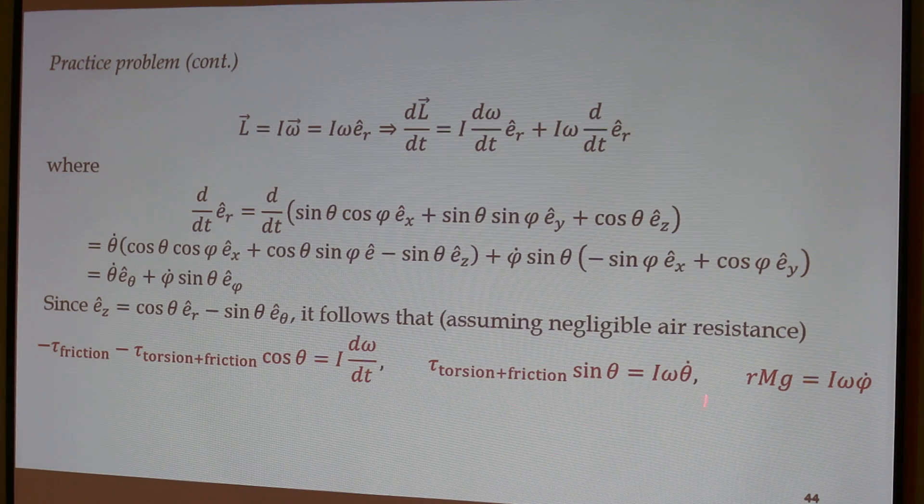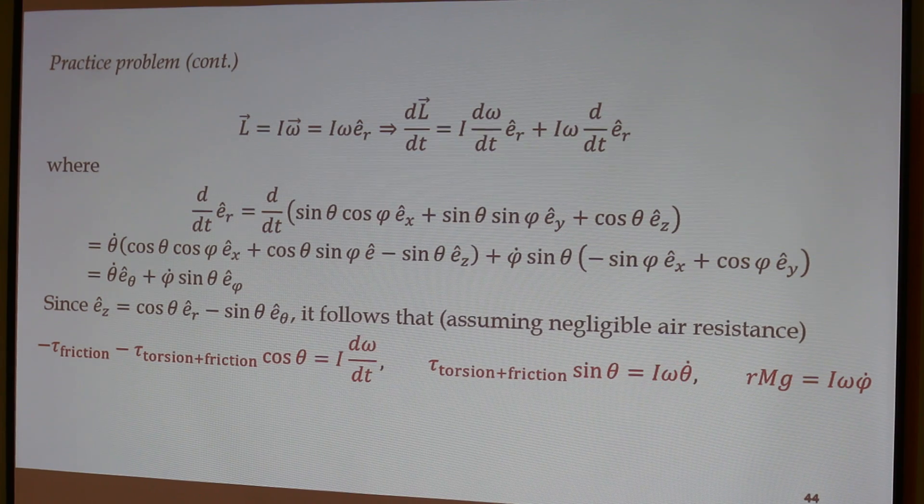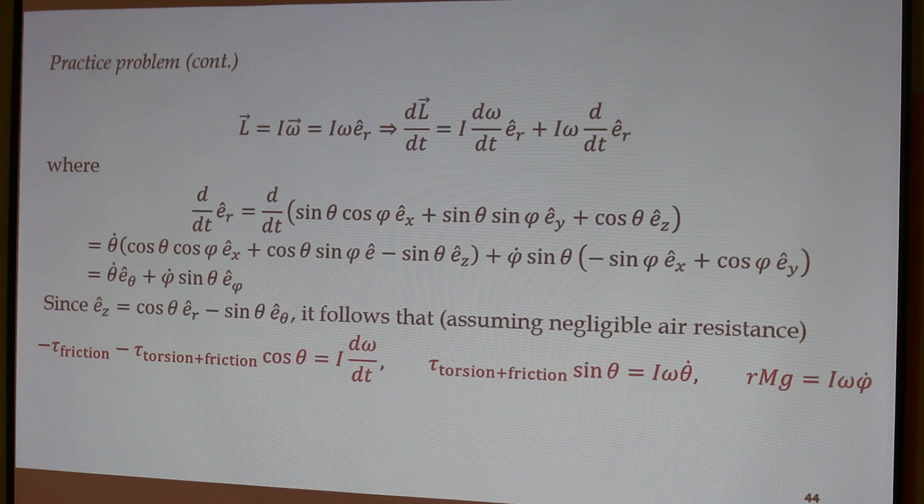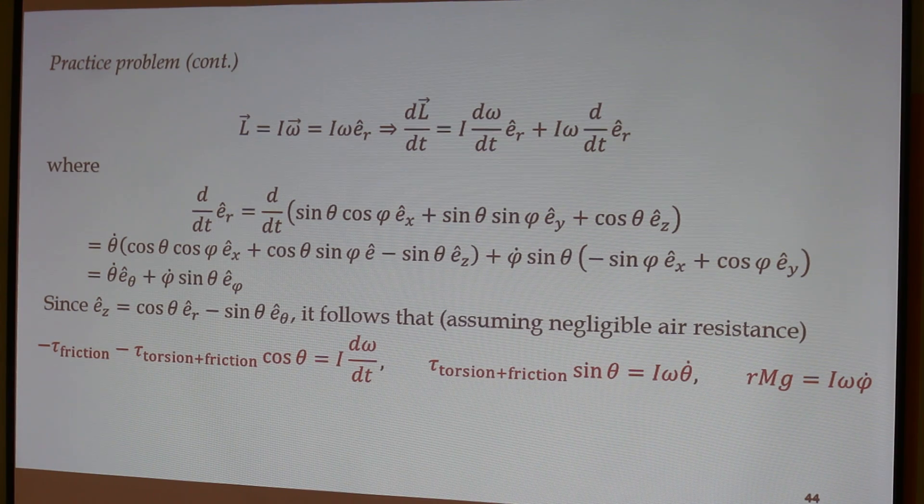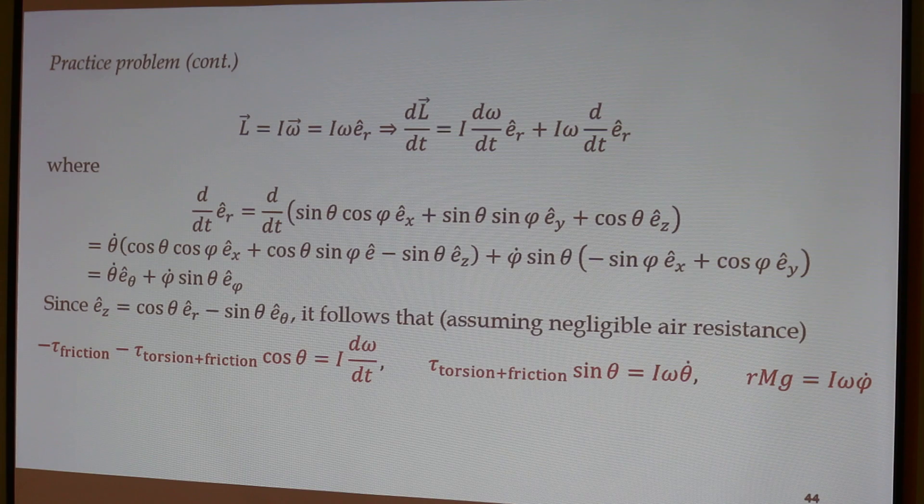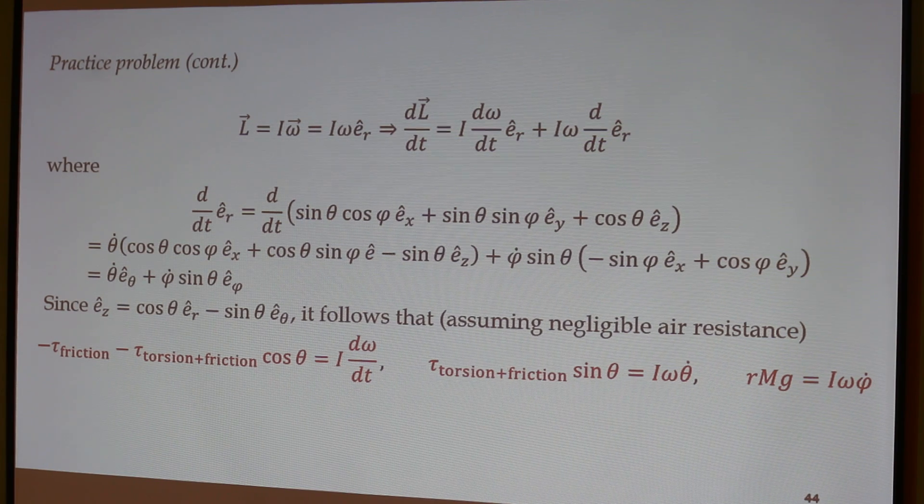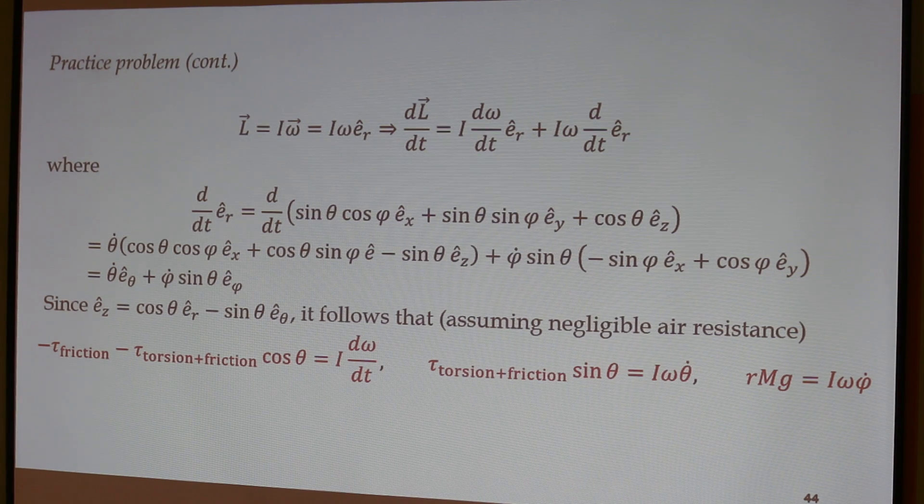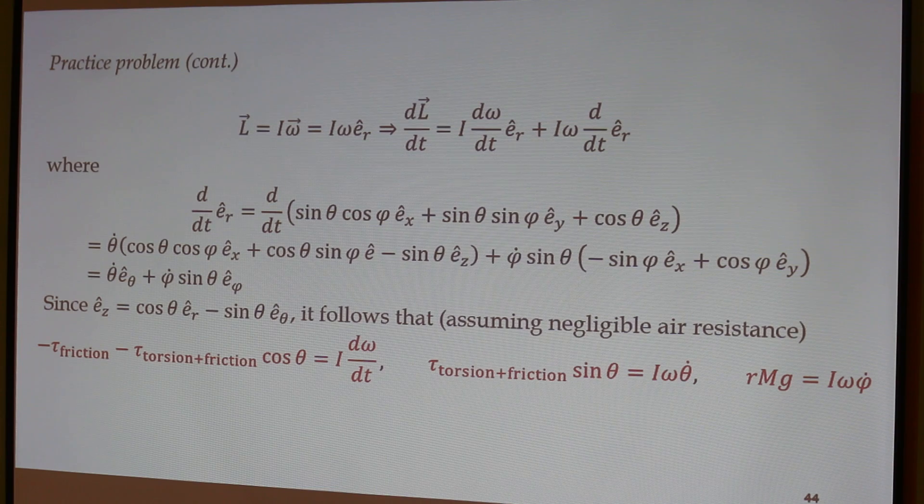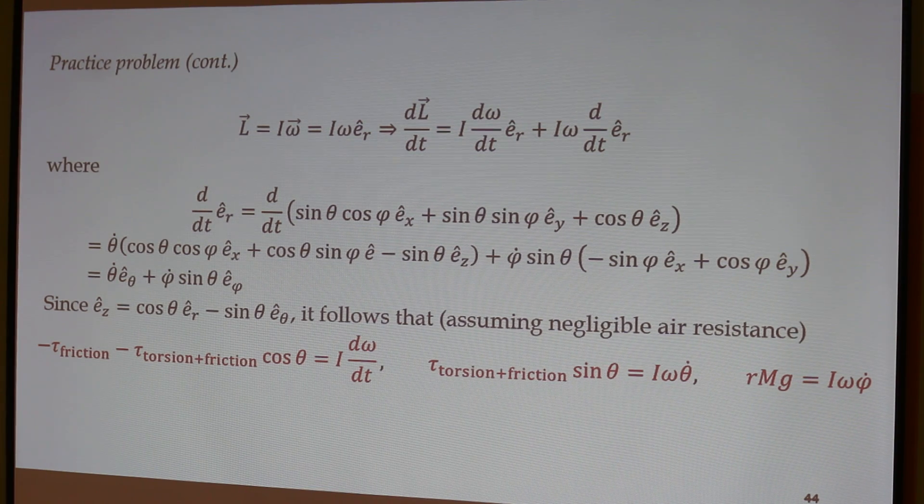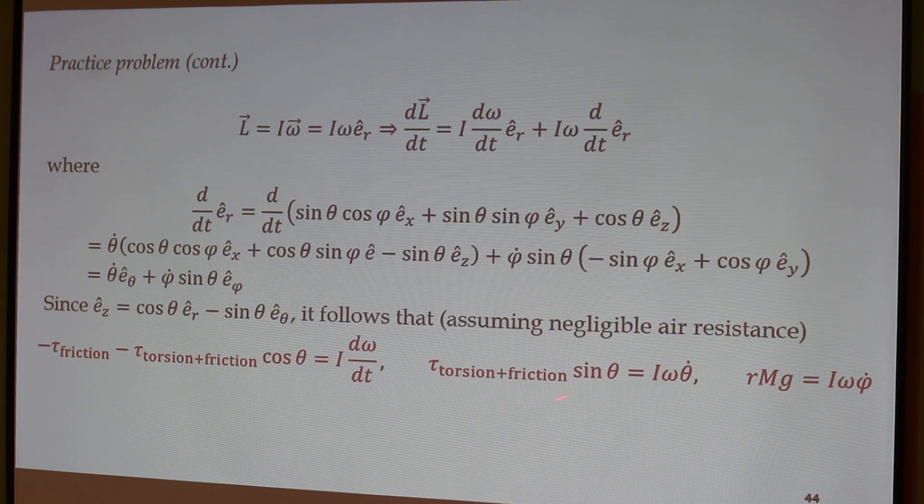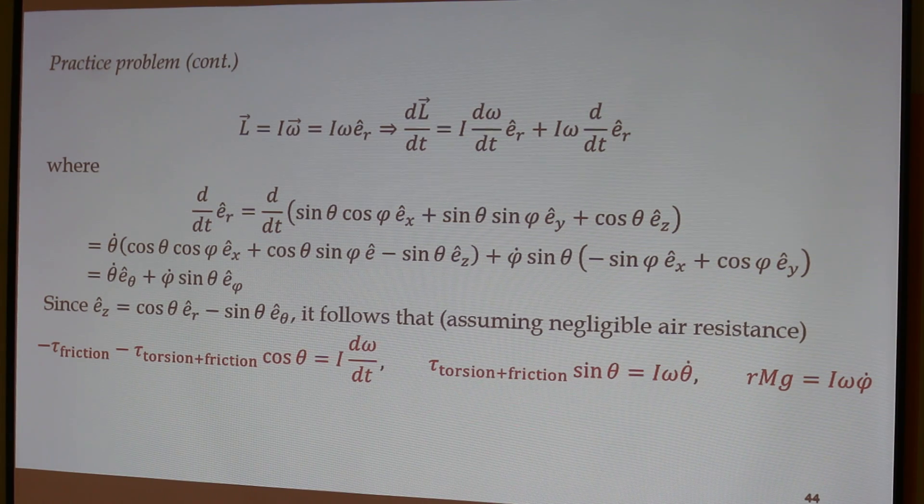Now this is where you can see theta dot. This is the theta. So this is the one that describes the dipping. If theta dot is positive, it means that it is doing this, the angle is increasing this way downward. All these things, I mean when you go through, you will realize. So I'm not going to try to make you understand here. So you can see here, this is due to the torsion in the string and the frictional torsion if there are any in the string.